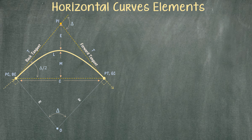The actual horizontal curve is the bold yellow curve that you see on this diagram. In order to explain all the main elements on the horizontal curve, I'm going to start at the left side of the curve and then work myself to the right side.